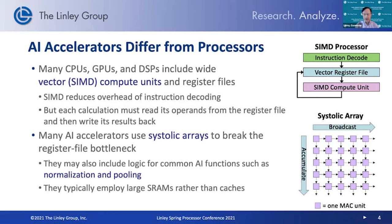A systolic array is an array of MAC units to handle the multiply-accumulate operation. The data moves autonomously and automatically from one MAC unit to the next, and the results flow down. This is a much more efficient structure than a SIMD architecture to accomplish a set of multiply-accumulates typically seen in an AI model. This is one of the key differentiating factors.